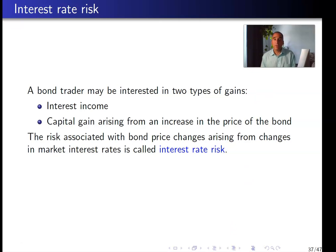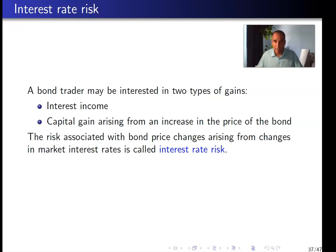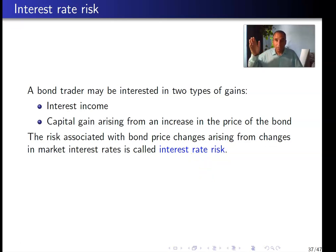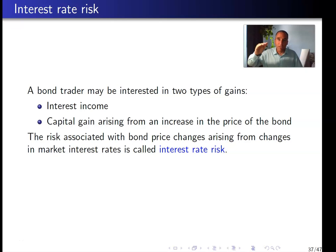Next, we consider interest rate risk. A bond trader may be interested in two types of gains: interest income and capital gains arising from a change in bond price because market interest rates have varied over time. This is called interest rate risk. If you invest in a bond and interest rates go up, your bond's coupon becomes less attractive relative to newly issued bonds, so the price of your bond should go down.